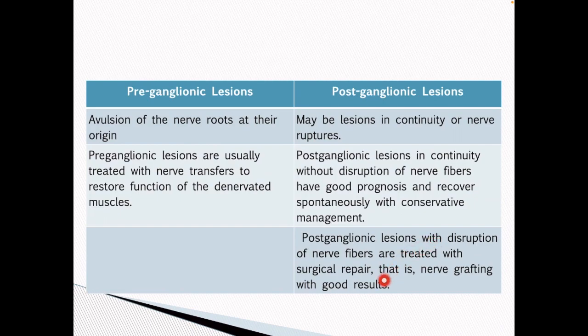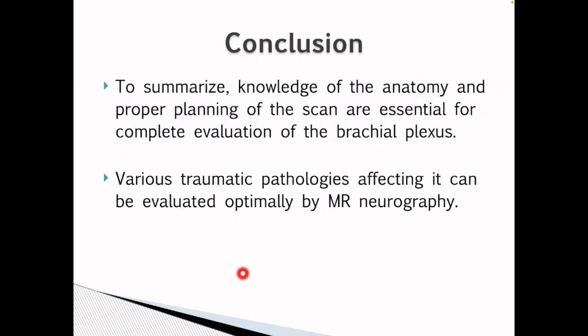Comparing preganglionic and postganglionic lesions: preganglionic lesions are generally avulsions of the nerve roots at their origin, while postganglionic lesions may be lesions in continuity or nerve rupture. Preganglionic lesions are usually treated with nerve transfer to restore function of the reinnervated muscles. Postganglionic lesions in continuity without disruption of nerve fibers have good prognosis and recover spontaneously with conservative management. Postganglionic lesions with disruption of nerve fibers are treated with surgical repair, i.e. nerve grafting, with good results.